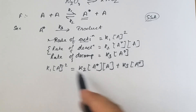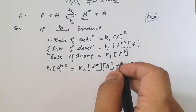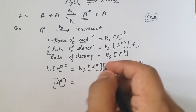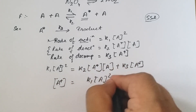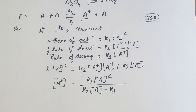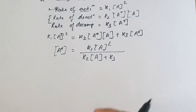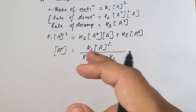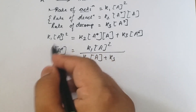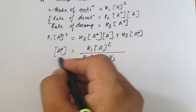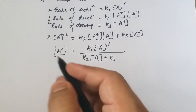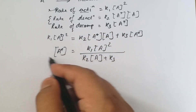Taking A* common and rearranging, the concentration of the activated complex is: [A*] = k₁[A]² / (k₂[A] + k₃). The rate of reaction is directly proportional to the concentration of the activated molecule, because only those molecules that are in the activated state will react.